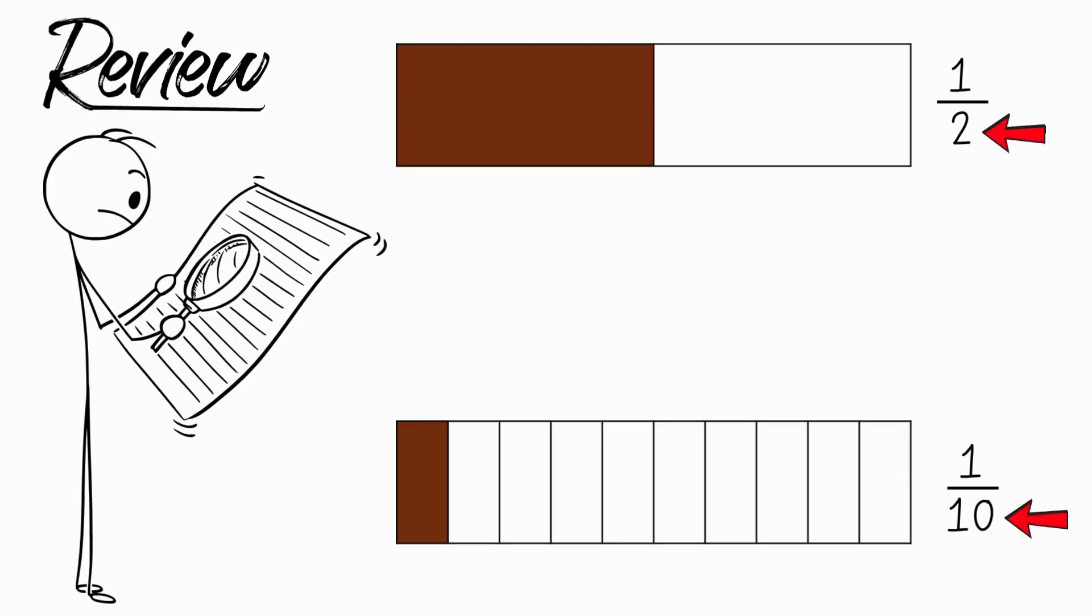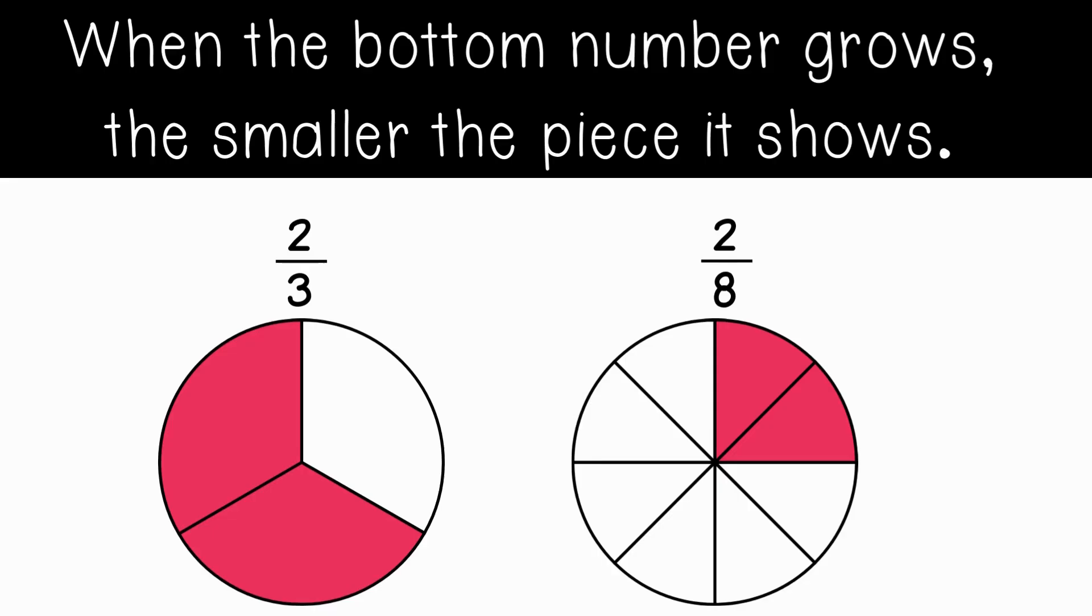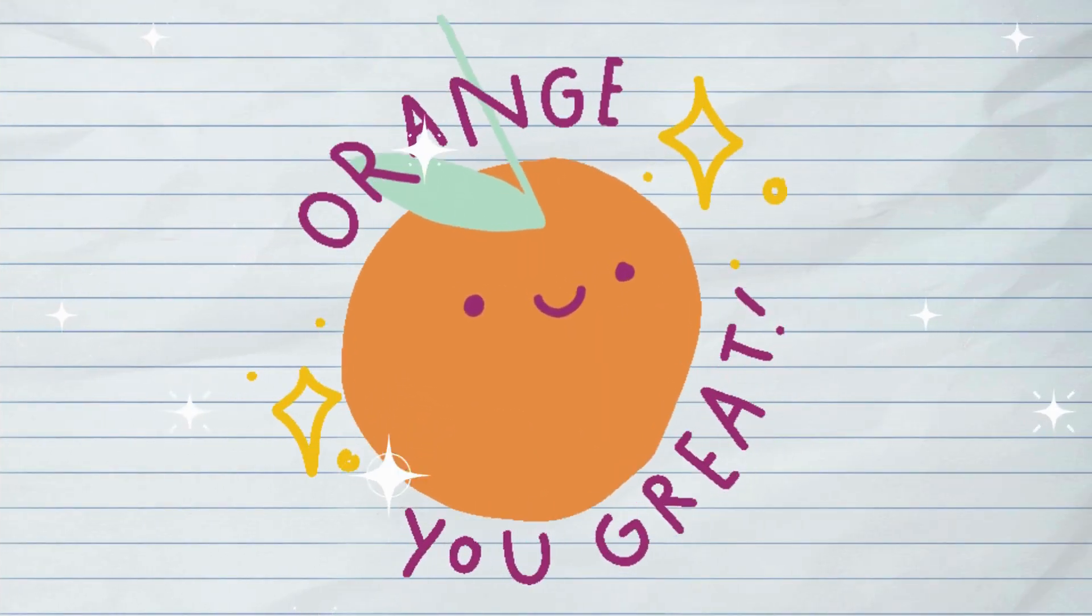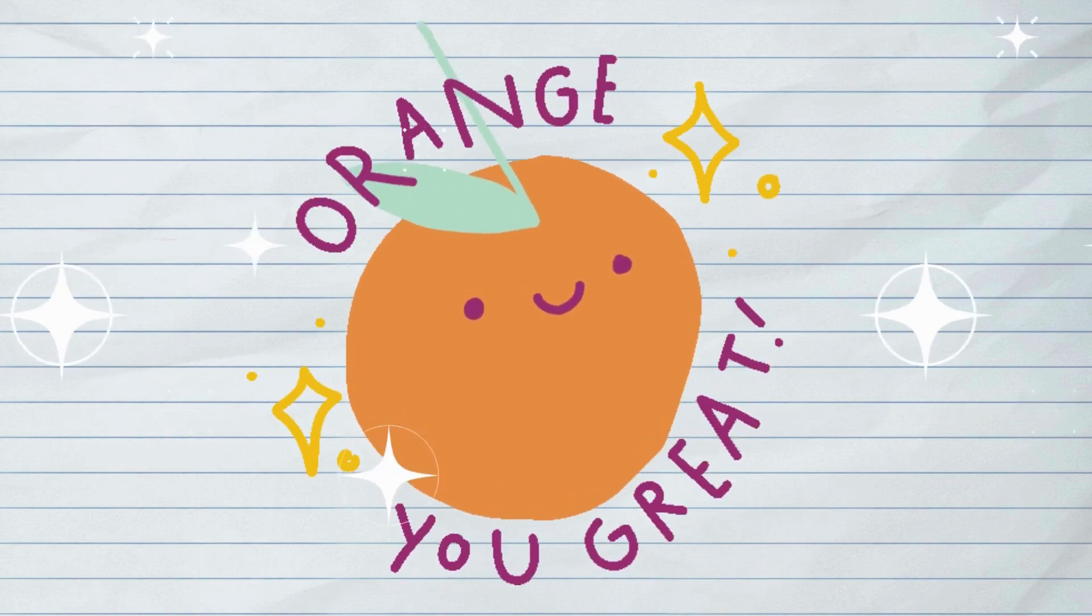Let's review. The denominator tells us how many equal parts the whole is divided into. The bigger the denominator, the smaller each part. So one-tenth is smaller than one-half, even though ten is bigger than two. Let's say it one more time together. When the bottom number grows, the smaller the piece it shows. Nice work today! Now you know that larger denominators mean smaller pieces. Keep practicing!